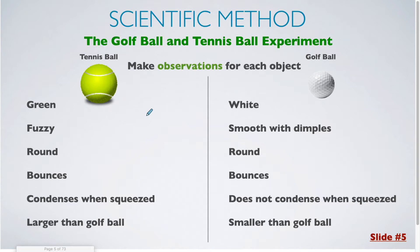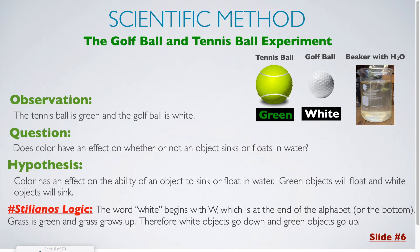For the golf ball, we could say that it's white. It's smooth but it has little dimples along the surface. It is also round and it also bounces. It does not condense when you squeeze it. And it is significantly smaller than a golf ball. Now that we've made these observations, we are going to continue and come up with a question.